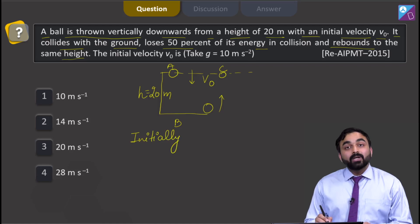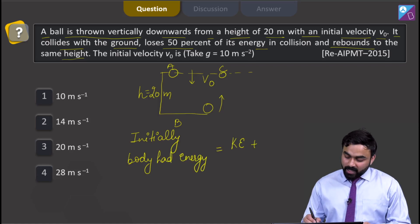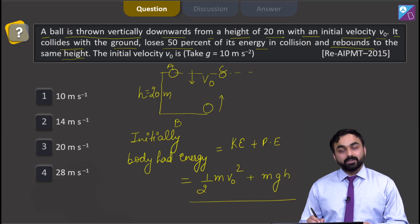initially, the body had energy in terms of kinetic energy as well as potential energy, which is equal to half m v0 square plus mgh. This is initial energy.